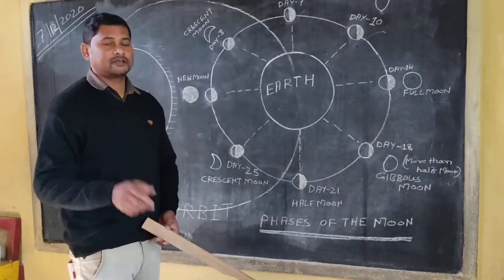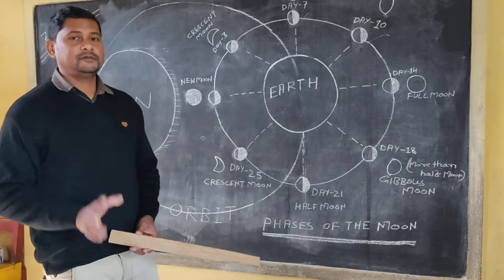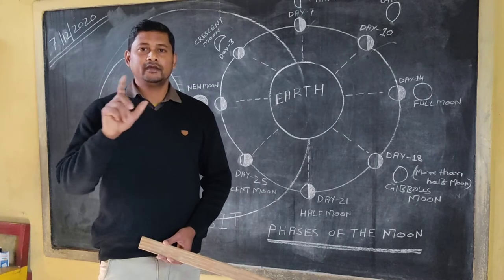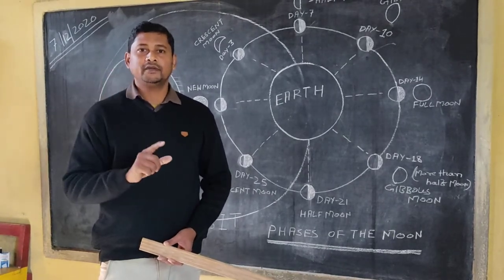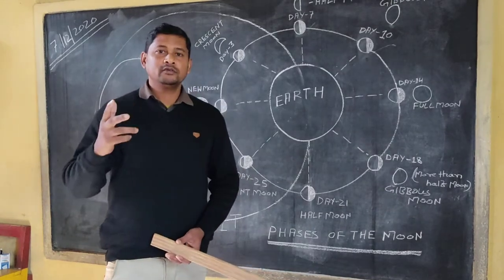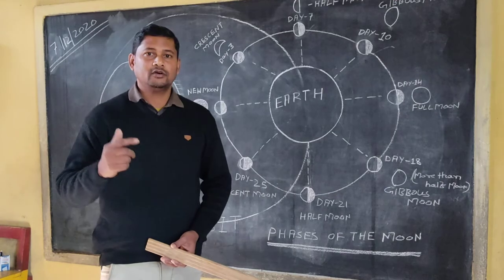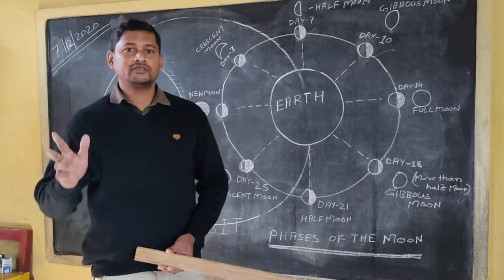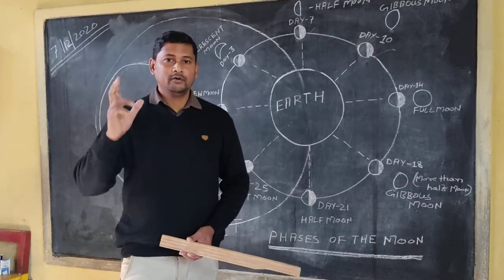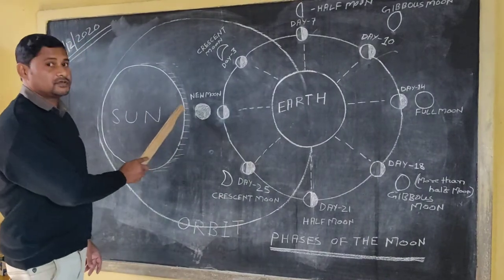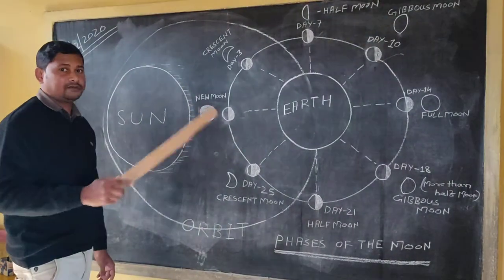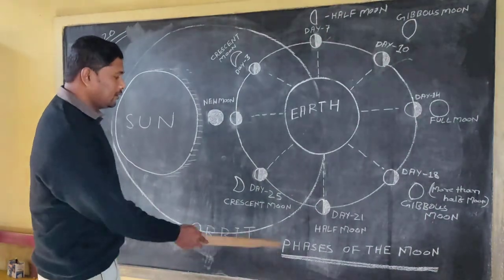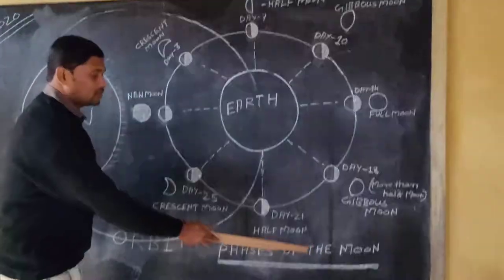Good morning my dear students. As I am explaining you about the solar system, in the previous video I explained that the sun is in the middle and the eight planets are moving around the sun, and the earth is also moving around the sun. At the same time, the moon is the natural satellite of the earth and the moon is moving around the earth. The moon has no light of its own — it gets light from the sun and reflects it to the earth, which is why we are able to see the moon. So here I am going to explain the phases of the moon.